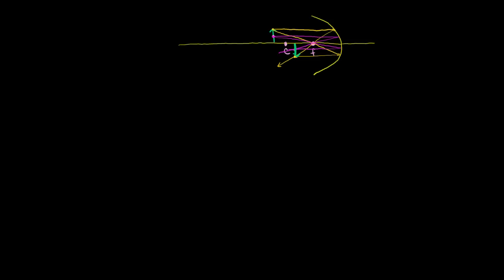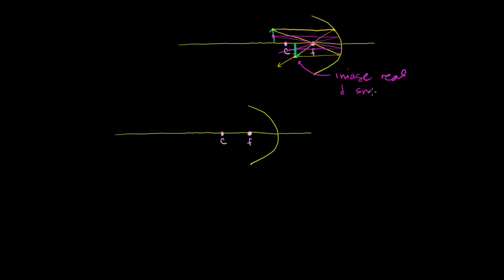Let's do another example. Let me put a big object way out here just to make it clear. We go parallel, reflect through the focus, and then go through the focus and reflect out. Now it's much clearer that the image is going to be much smaller, and of course inverted relative to the actual object. So here the image is real and smaller than the actual object when the actual object is beyond the center of curvature.